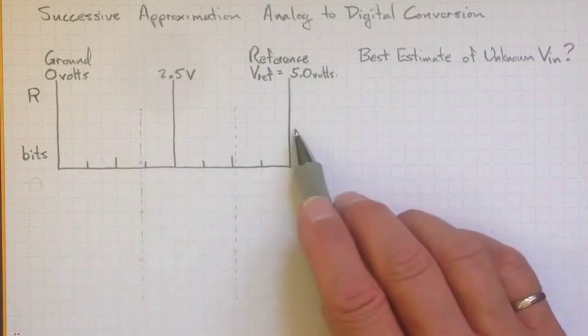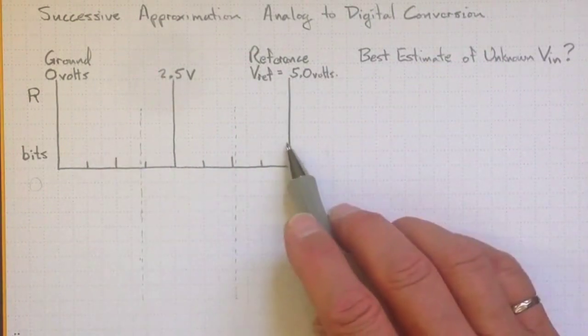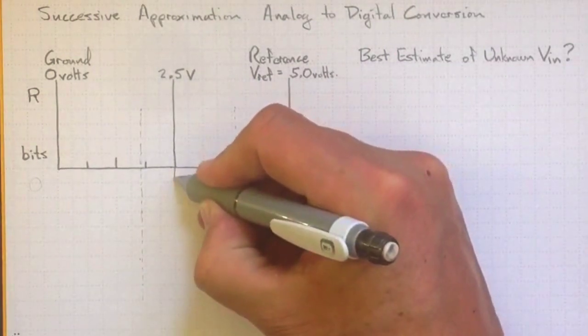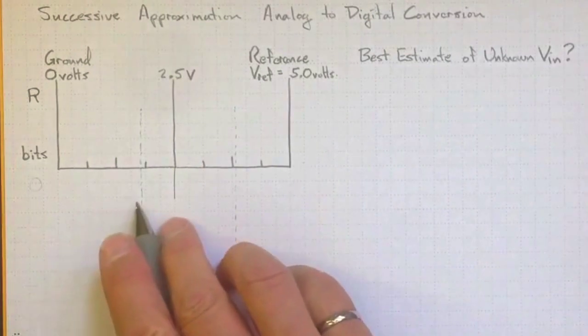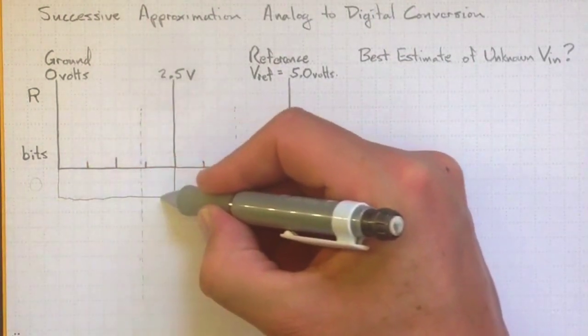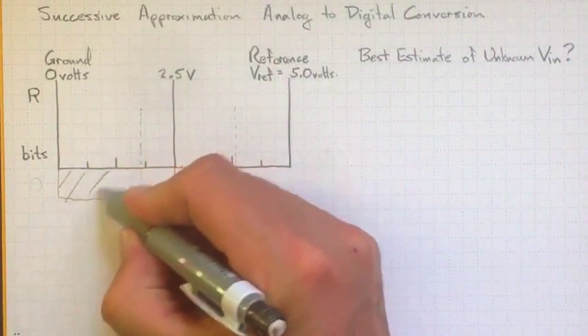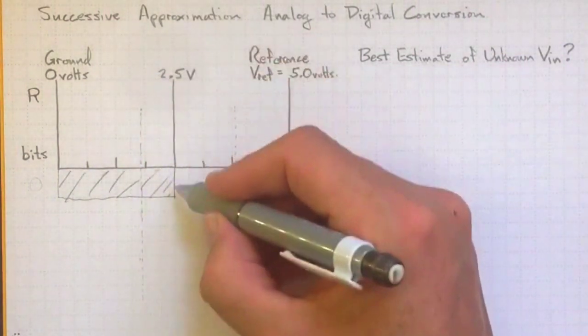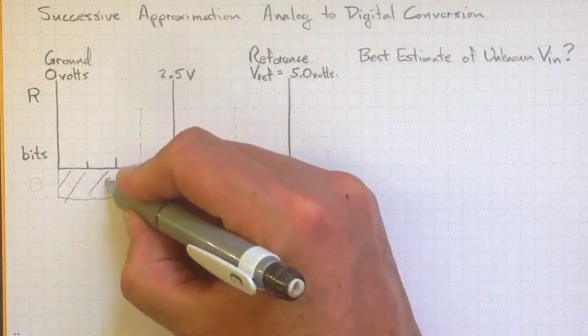Certainly it's less than the reference voltage, so we know it's less than 5 volts. Is it less than half the reference voltage? So there's half the reference voltage, and yeah, it is less than half. So we know that it lies somewhere in this region here. So it was less than half, so let's represent that with a zero. If it was over here, we'd represent it with a one.